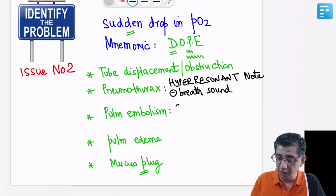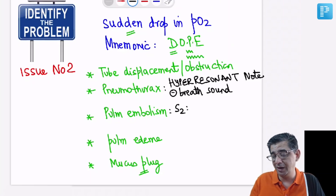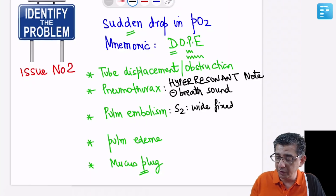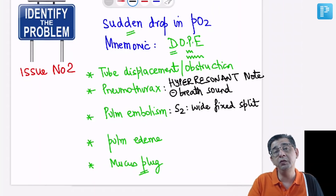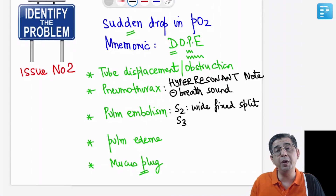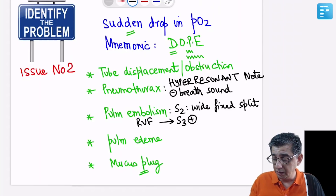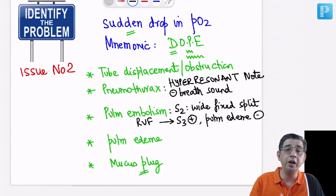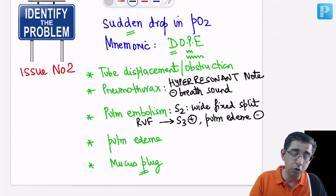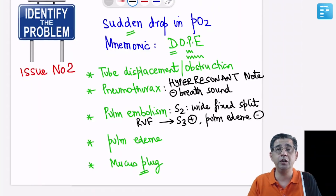When it comes to pulmonary embolism, important clinical findings include: the second heart sound can be wide fixed split — everyone remembers wide fixed split for ASD, but it applies to pulmonary embolism as well. Using the bell of the stethoscope you will hear S3, because in pulmonary embolism it is the right ventricle that fails. However, there will be no evidence of bilateral crepitations in the chest — pulmonary edema will be absent.